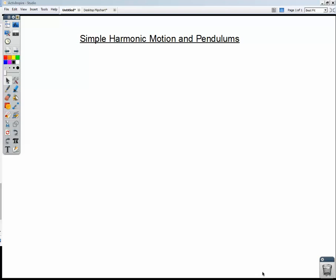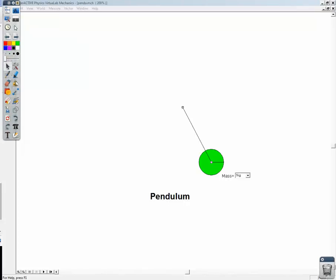So we already talked about springs, and we talked about how the period of the spring is directly proportional to the mass that's on the end of the spring, and inversely proportional to the spring constant. Now let's take a look at pendulums and what matters for a pendulum.